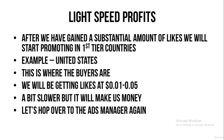First-tier countries are countries that are a bit richer and have the ability to pay for more expensive products — for example, the United States. Those are affluent countries where the buyers are. You have to do this after you've gained social proof, because I tried doing this before getting social proof and I was getting likes at around 10 to 15 cents each. After doing the social proof phase with cheap countries, I started getting 1 to 5 cents max targeting the United States — a bit slower, but it makes you money.